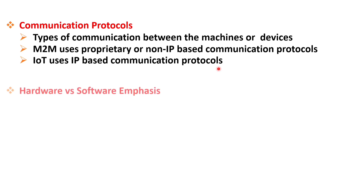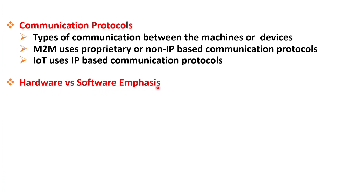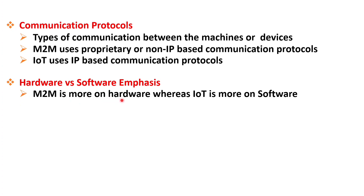Now let's discuss hardware and software emphasis in both M2M and IoT. M2M is more focused on hardware, whereas IoT is more on software. M2M primarily focuses on the hardware aspect of connectivity between machines or devices. It involves the use of embedded modules like sensors, actuators, and other physical components to enable communication and data exchange between various machines.